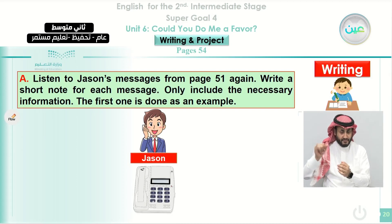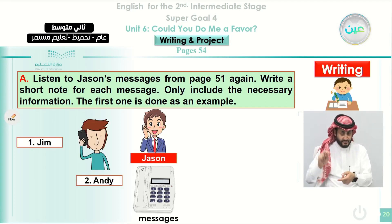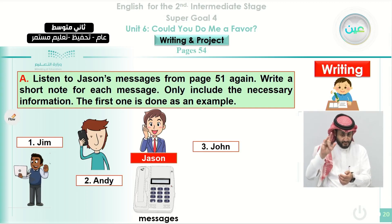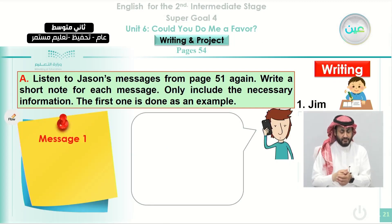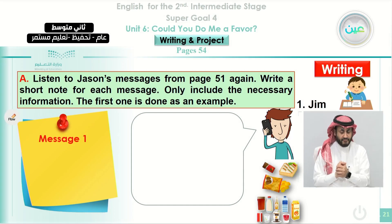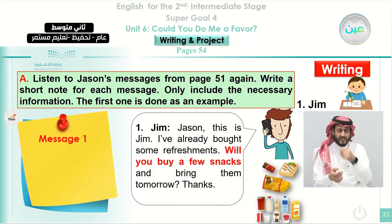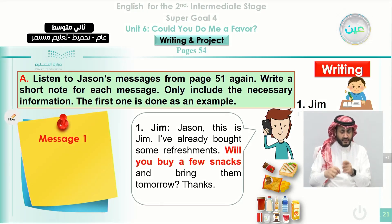We will start with Jim. The second one is Andy, and the third one is John, and then Charles. We start with the first one — that is Jim. What did Jim ask his friend Jason to do? He said that he has some refreshments and wants his friend Jason to bring some snacks. Let's listen again to this message to find out how to report it as a note. [Message plays]: 'Jason, this is Jim. I've already bought some refreshments. Will you buy a few snacks and bring them tomorrow? Thanks.'